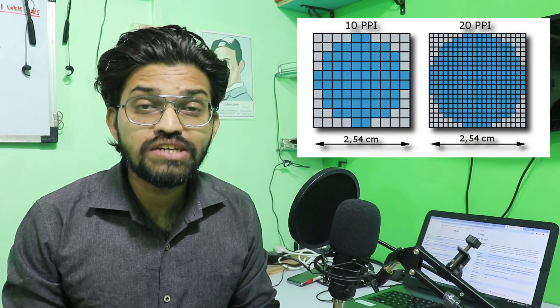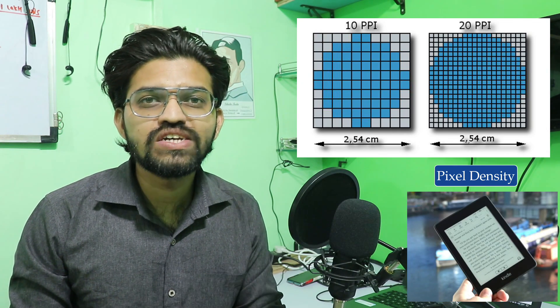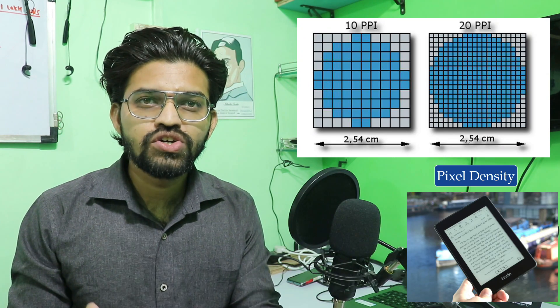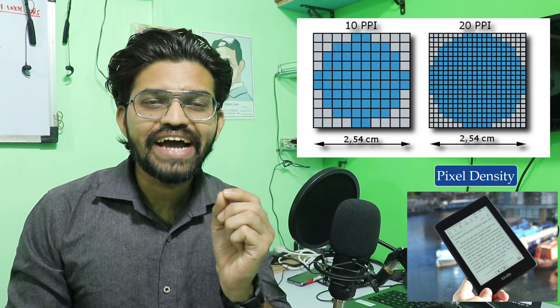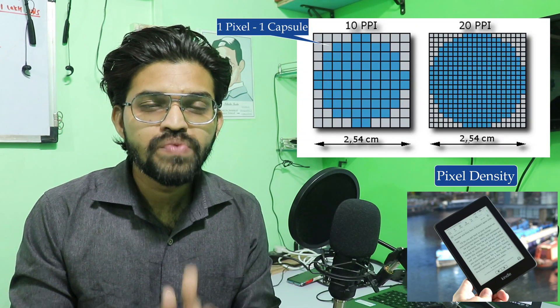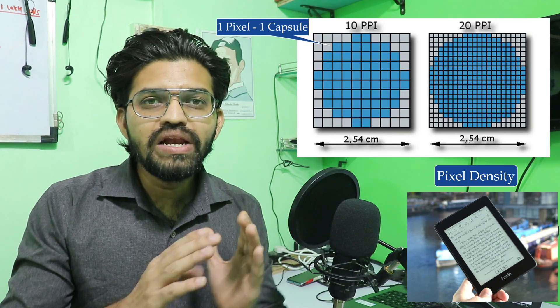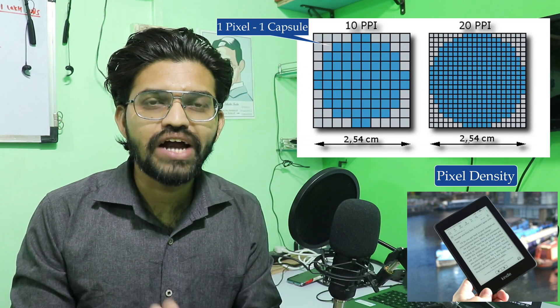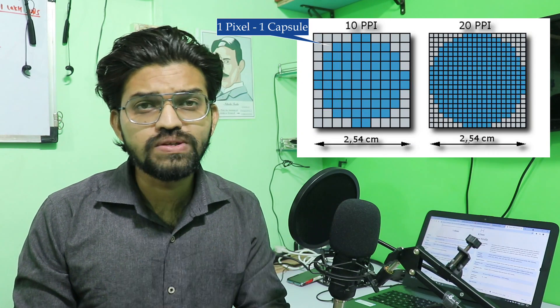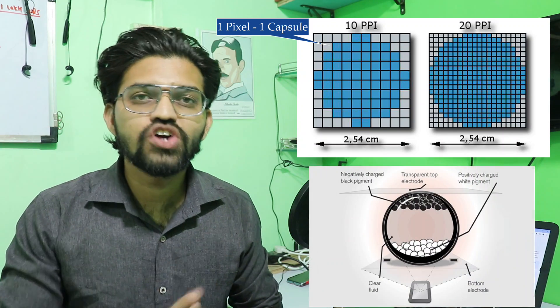When we talk about displays, the first thing that comes to mind is resolution. The Amazon Kindle has a resolution of 161 ppi - pixels per inch. These displays are made up of tiny pixels. Each tiny pixel can be called a capsule. In the Amazon Kindle's electronic paper, there are millions of capsules arranged horizontally and vertically, which ultimately produce one image on the screen.